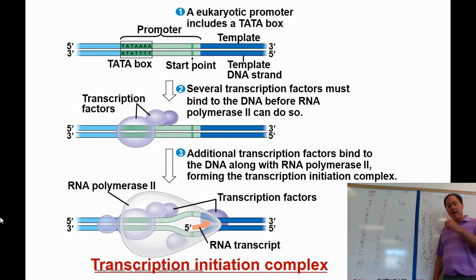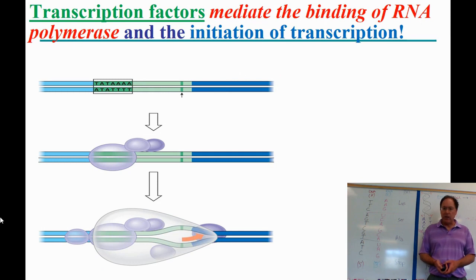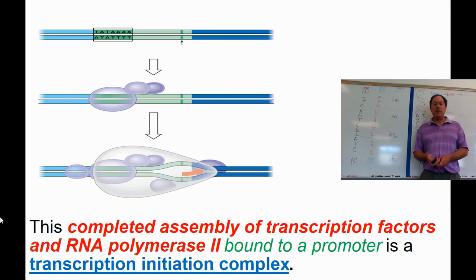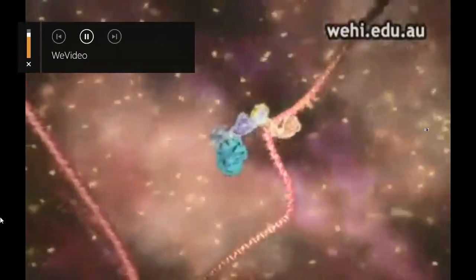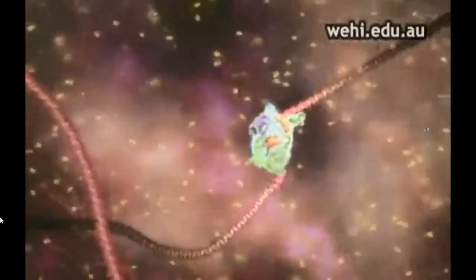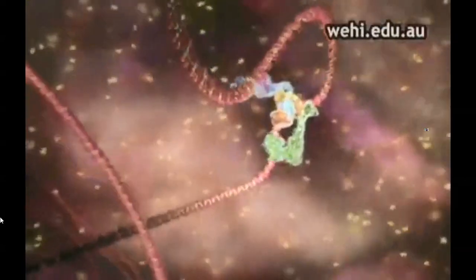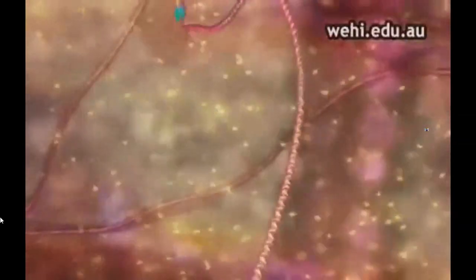See at the bottom of that initiation complex — if everything is perfect, finally transcription can take place. Transcription factors mediate the binding of RNA polymerase and the initiation of this transcription process. The completed assembly of transcription factors and RNA polymerase 2 bound to a promoter is called the transcription initiation complex. This is the beginning of transcription — all these components have to come in and be perfect, and then the DNA bends and RNA polymerase can go ahead. The mRNA is being made from a message on DNA.